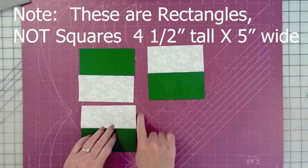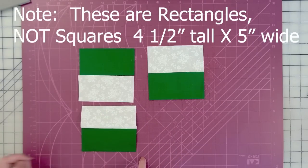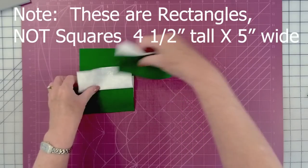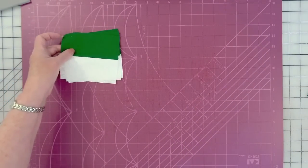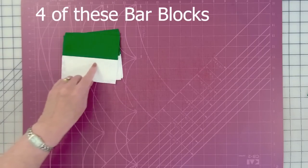Again, this is four and a half by five. Note that it is a rectangle, not a square. And we're going to need four of these for this block.